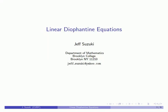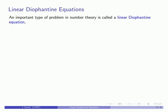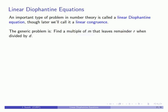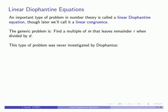One of the basic problems investigated in number theory is known as a linear Diophantine equation, although another more modern term for it is a linear congruence. The generic problem is: find a multiple of some number m that leaves a specific remainder r when we divide it by some specific divisor d. These are called linear Diophantine equations even though this type of problem was never actually investigated by Diophantus.